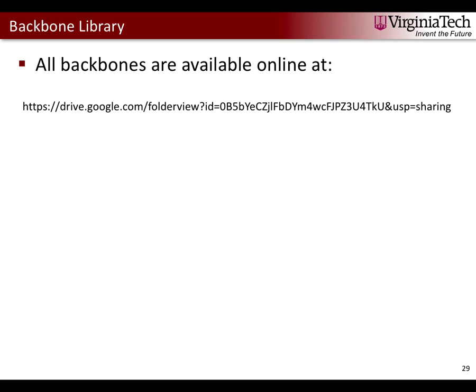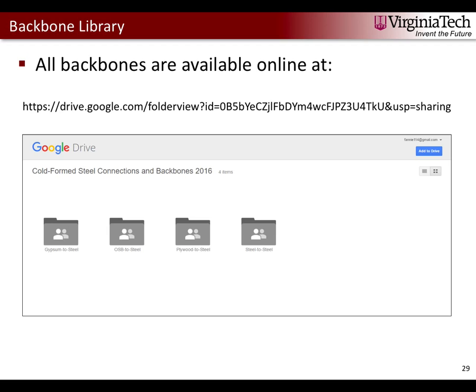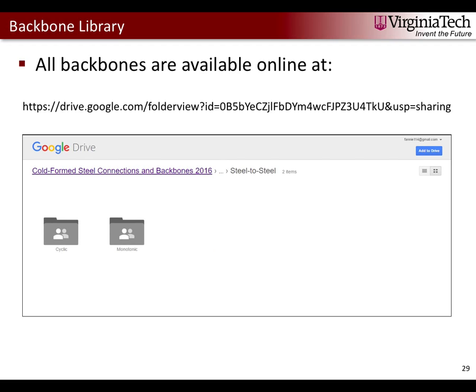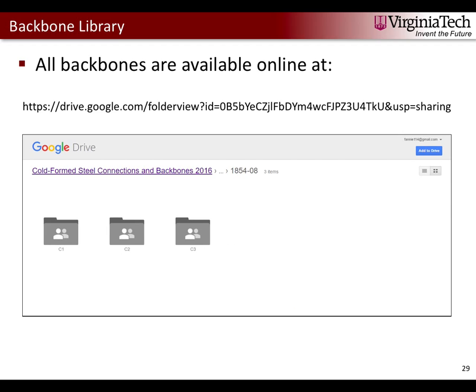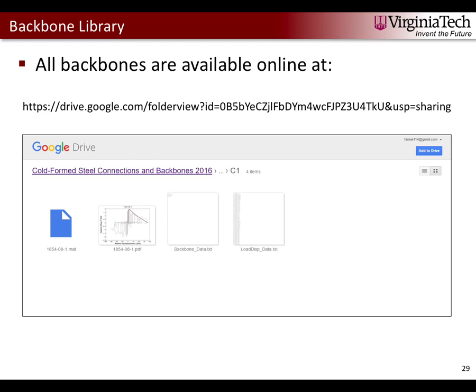All backbones and raw data are available online to the public at the provided link. The page has four folders for different material tests. For example, going into steel-to-steel you get cyclic and monotonic folders; inside each folder are all the test combinations and trials. Each trial contains four files: a .mat file with raw load-deformation and backbone data, a PDF plot, and two text files — one for the backbone and one for load-displacement data — for users without MATLAB.